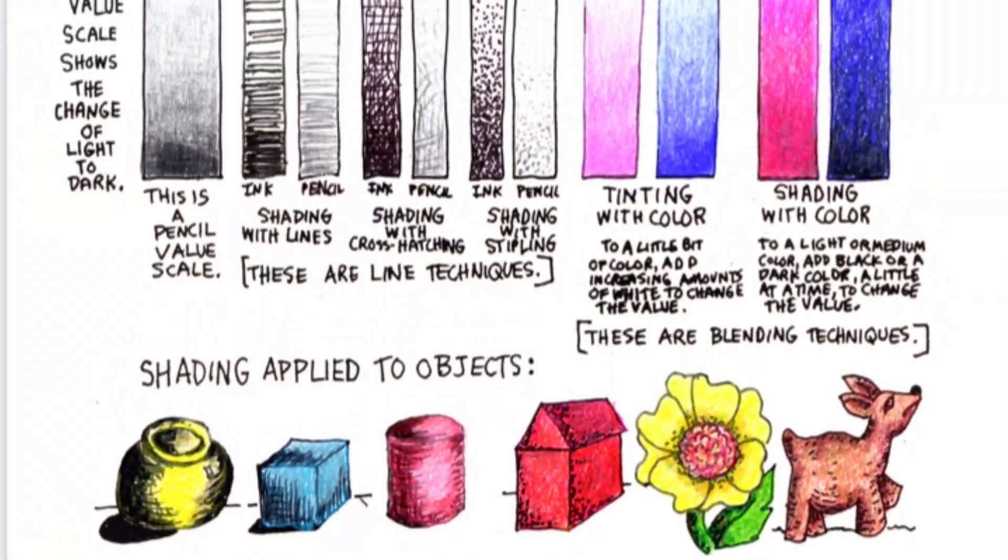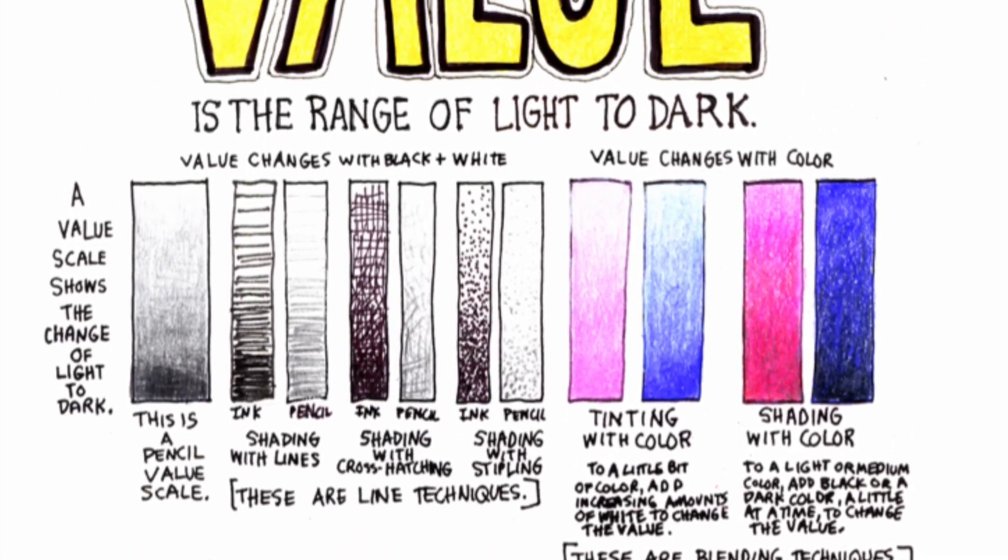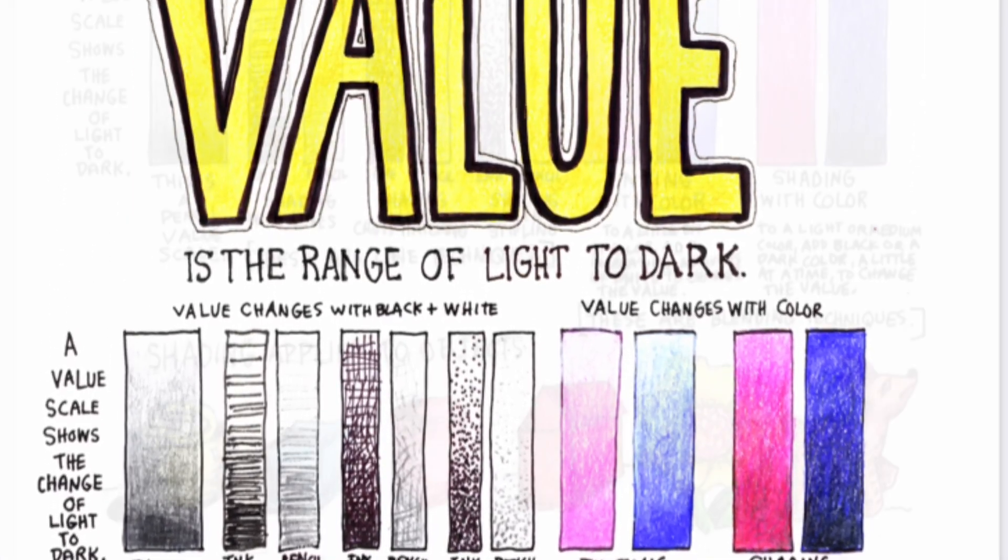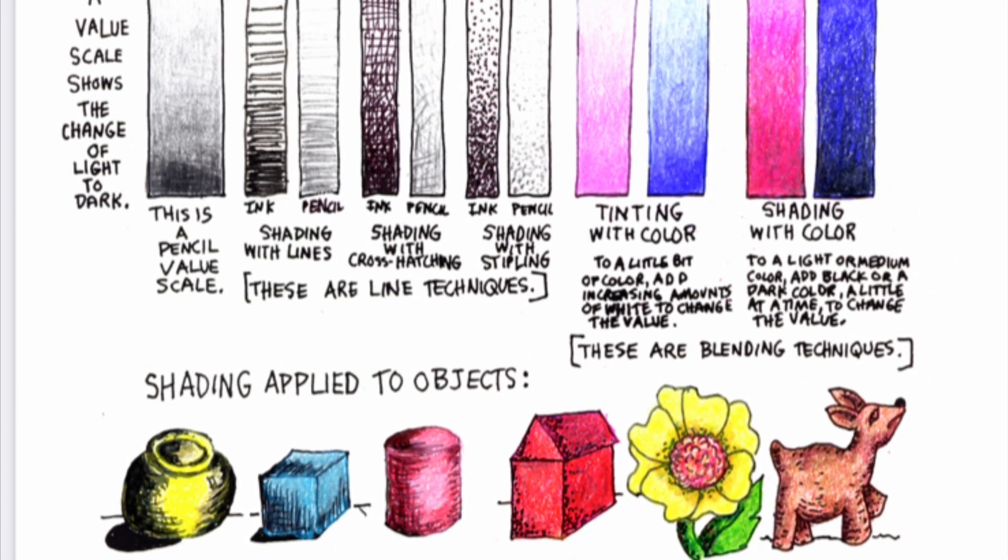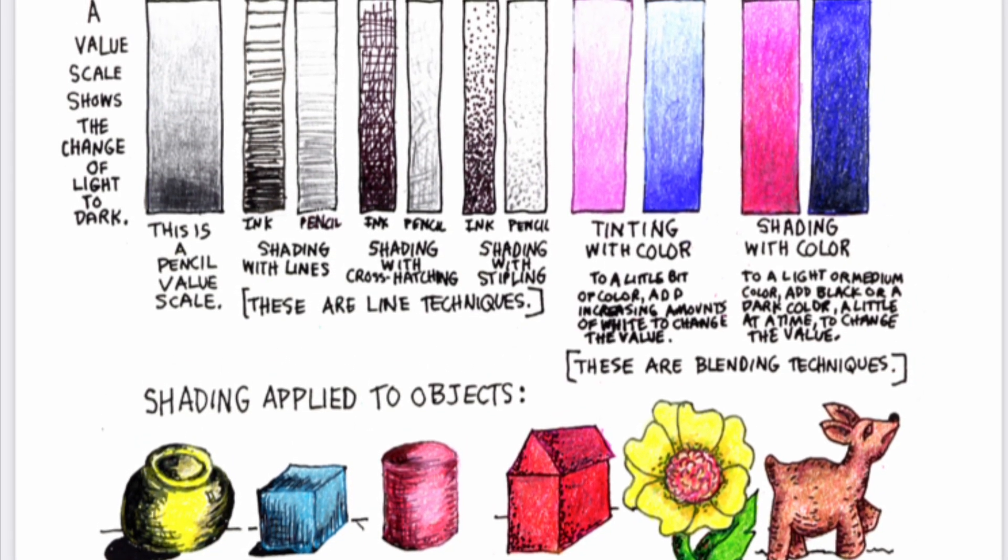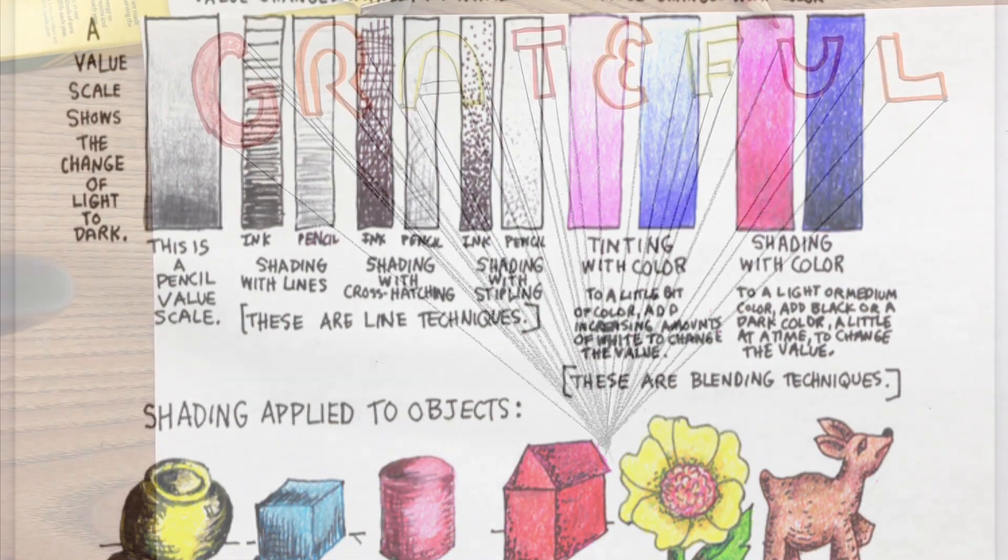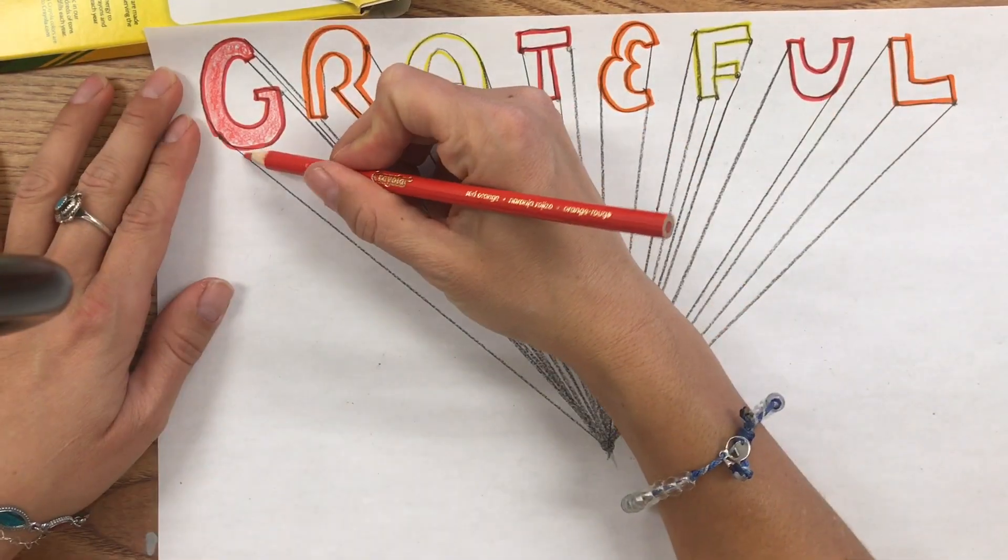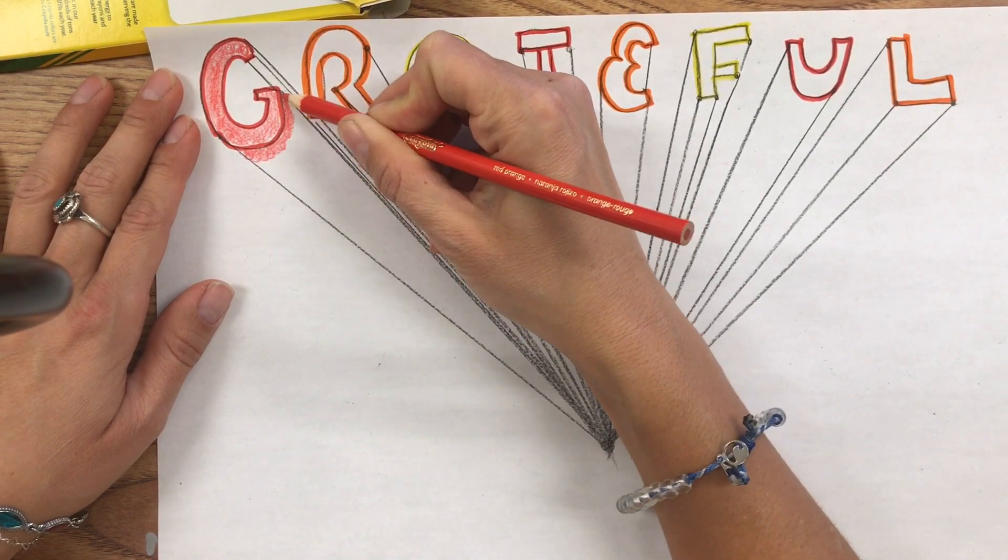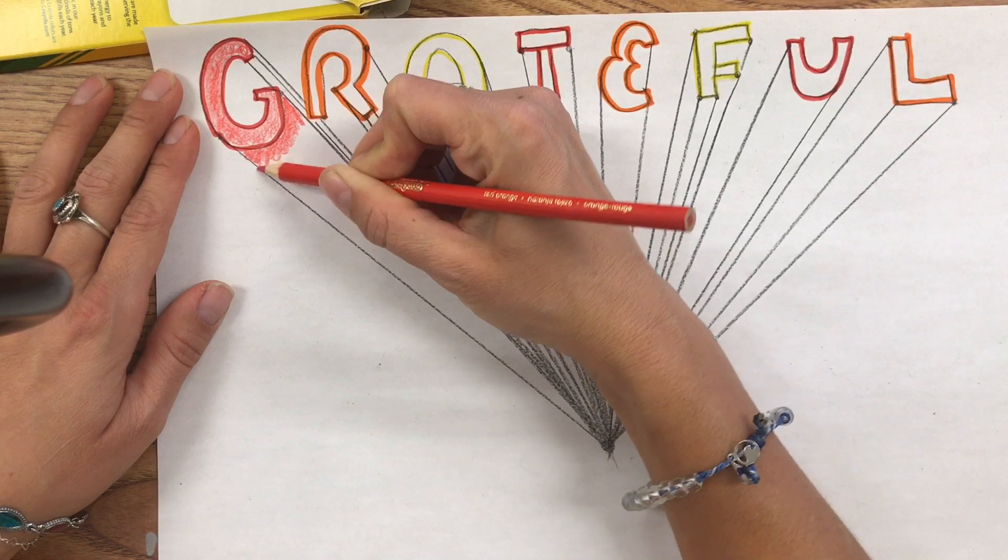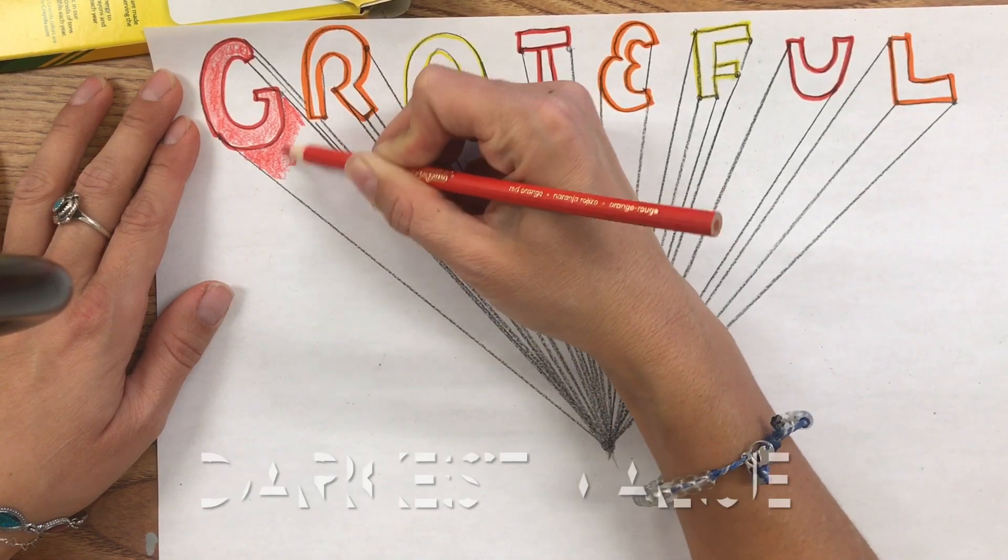We're going to focus on value, the range of light to dark. Value is going to add to the illusion of space. Value is what artists use to create the illusion of a form. I'm going to start with my darkest value here. Value also helps with the illusion of space.